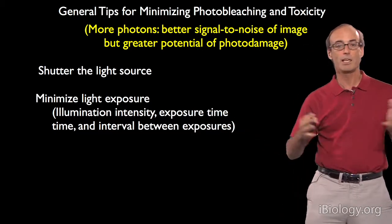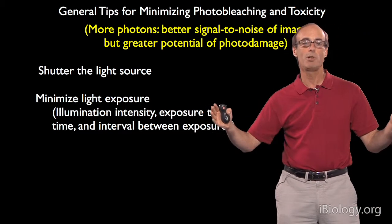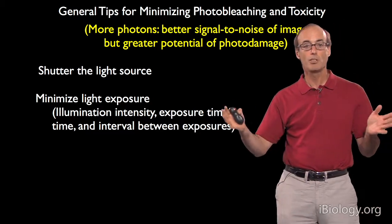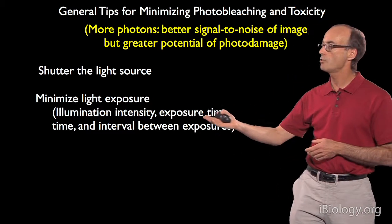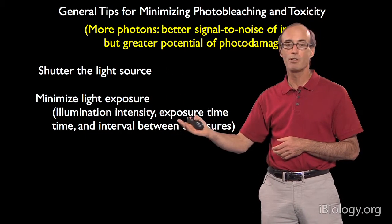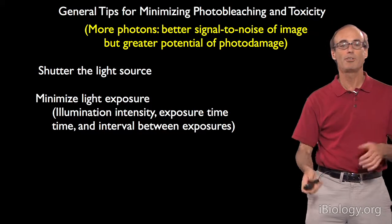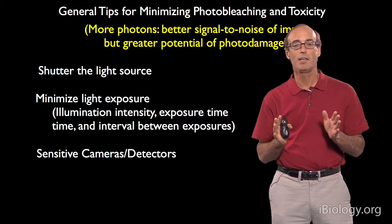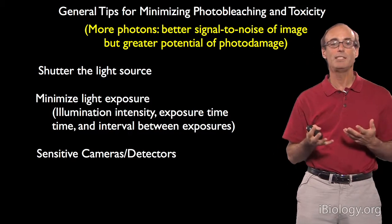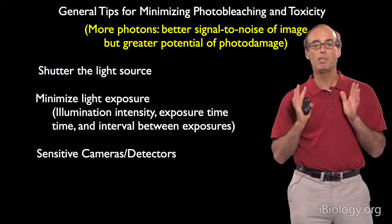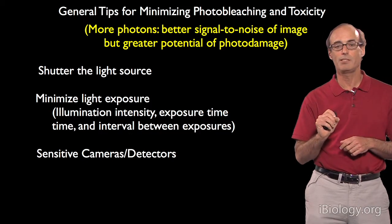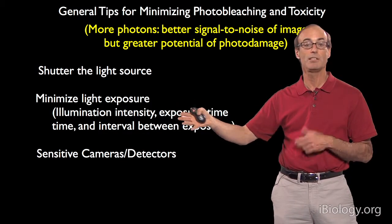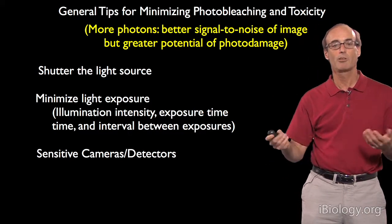Another thing we can control in a time-lapse movie is the interval between exposures, which depends on the dynamics of the process. For very slow processes in a cell, we have the luxury of shuttering the light source for longer periods between exposures, which also minimizes photo damage. Another big breakthrough is using very sensitive cameras — EMCCD cameras have been a major advance in live cell imaging because they are extremely sensitive, allowing very low illumination while still collecting very good images and creating less photo damage.